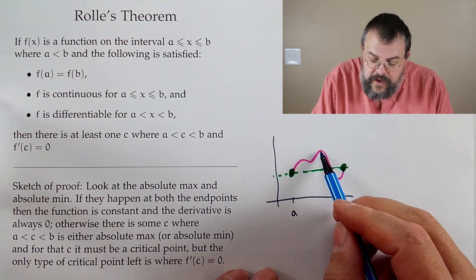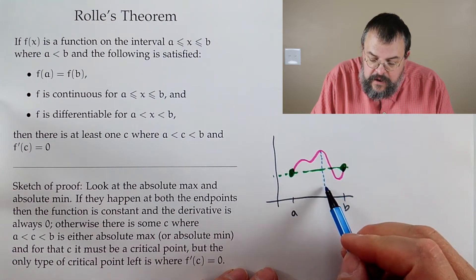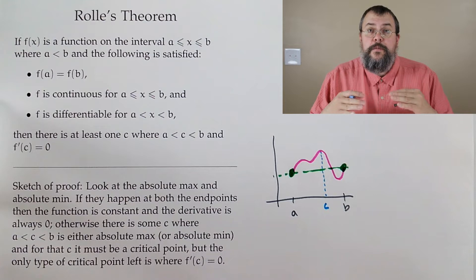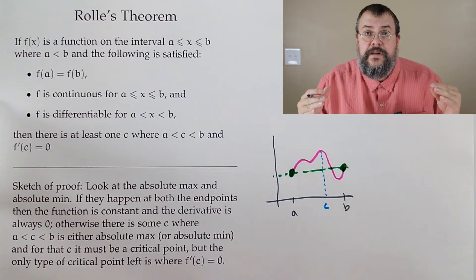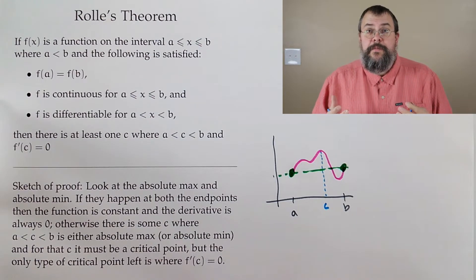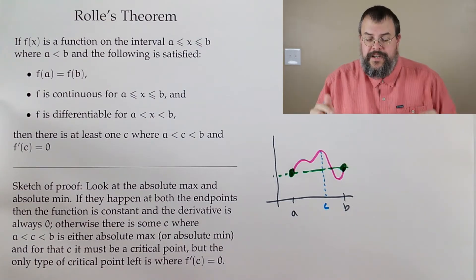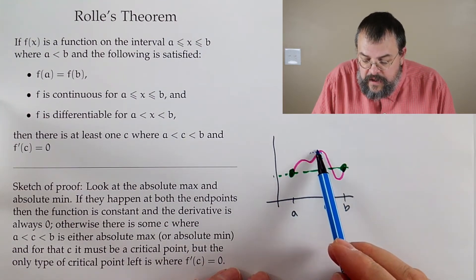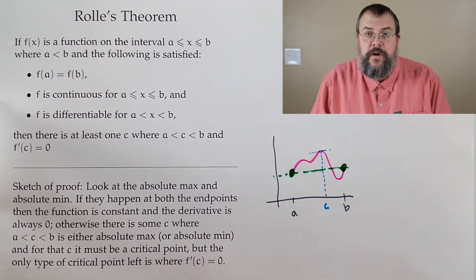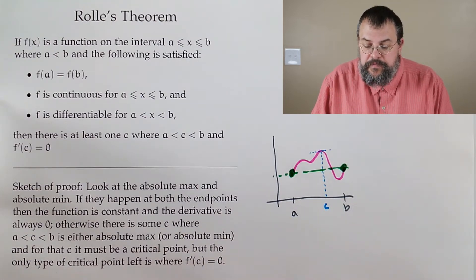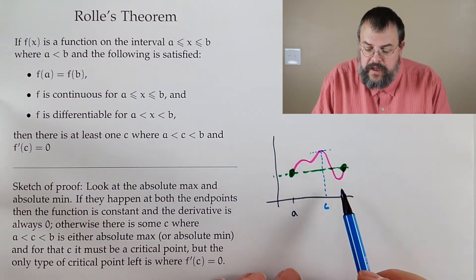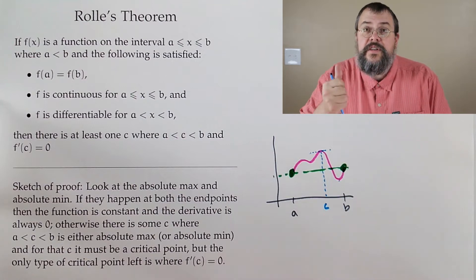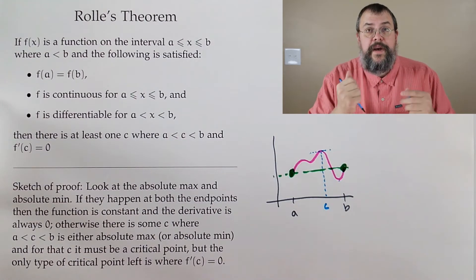Think of the derivative as the slope of a tangent line. The derivative equals zero means I have a flat tangent line. For instance, a peak would be a place where the derivative equals zero. It doesn't have to be at the top — it could be at the bottom. The theorem says there's at least one such point; it could be many.